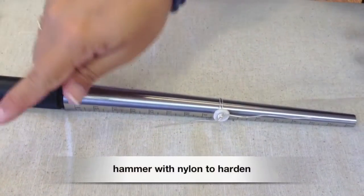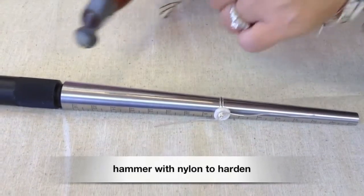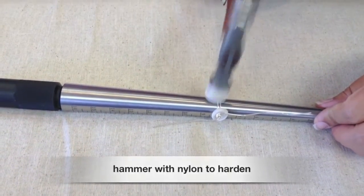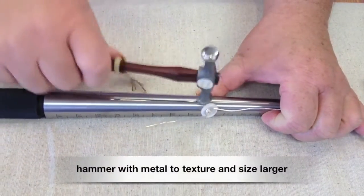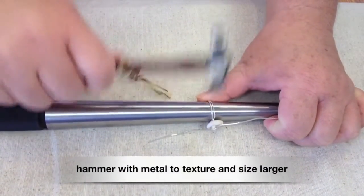To strengthen the ring shank, we're going to hammer it with a nylon or a metal hammer. The nylon hammer will harden it, the metal hammer will texture it and also it will stretch the metal out so it can make it larger, just in case it was a little bit tight.